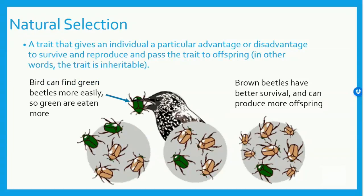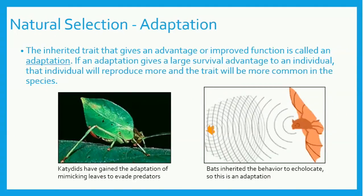Natural selection is one of the most talked about mechanisms of evolution. When a trait gives an individual a particular advantage to survive, then that individual can reproduce and pass that trait on to offspring. The big distinction here is that the trait must be heritable. In this example, green beetles are easier for birds to find and eat; therefore, the gold or brown beetles have better survival rates and can produce more offspring. A trait that gives a species a survival advantage must be heritable to be considered a natural selection mechanism. An inherited trait that gives an advantage or improved function to an individual is called an adaptation. If the adaptation is especially useful to survival, the individual will survive longer and therefore reproduce and pass the adaptation on to offspring.